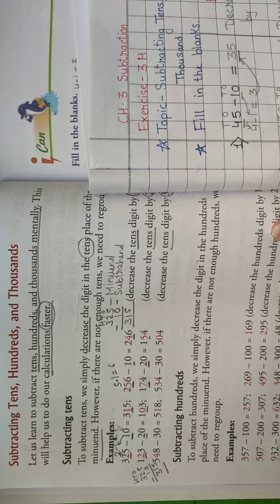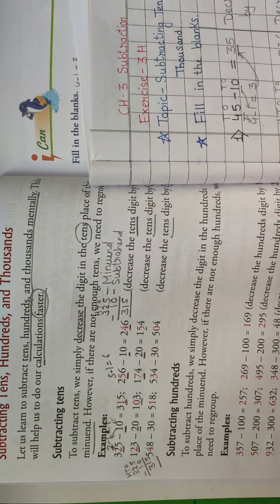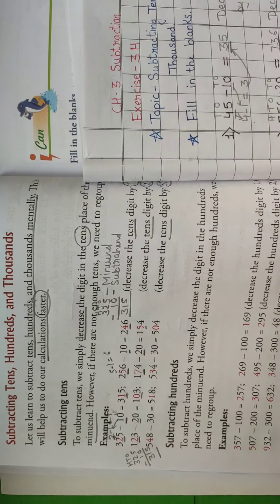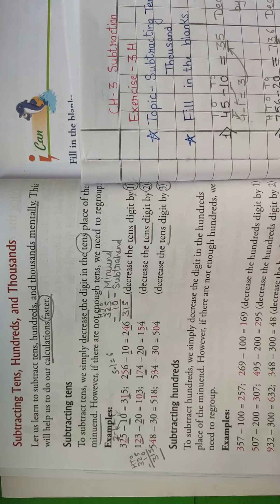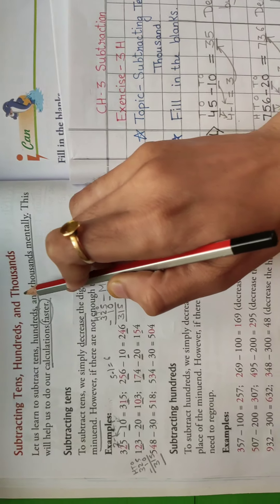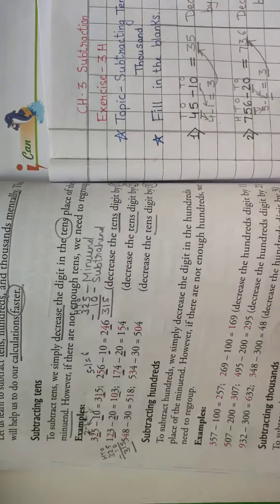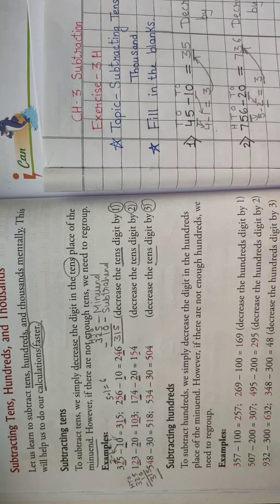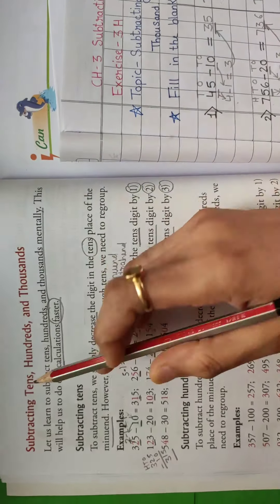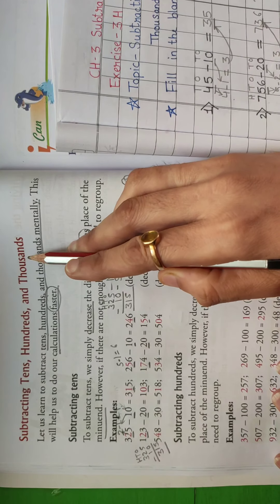Hello students, welcome to my online class. Hope you all are fit and fine. I hope you completed exercise 3G of chapter number three, subtraction. Today I am going to teach you subtracting tens, hundreds and thousands, which is in your maths book page number 72. Please take out your maths books, page number 72. Today we will focus on this concept: subtracting tens, hundreds and thousands.